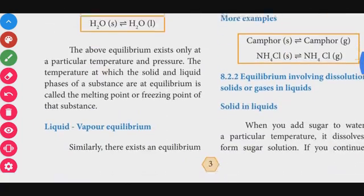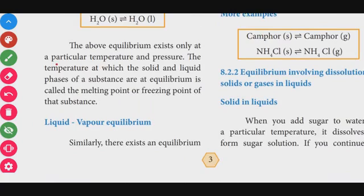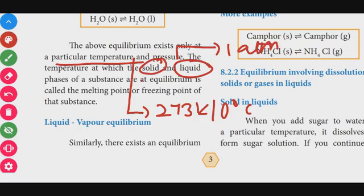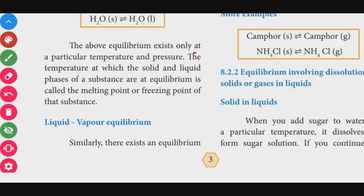The above equilibrium exists only at a particular temperature and pressure — that is 273 Kelvin or 0 degrees Celsius, and 1 atm pressure. The temperature at which the solid and liquid phases of a substance are in equilibrium is called the melting point or freezing point of the substance. This is a two-mark question.